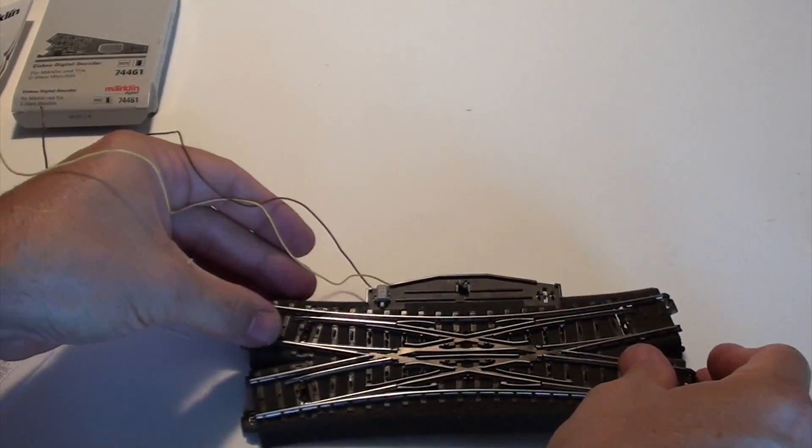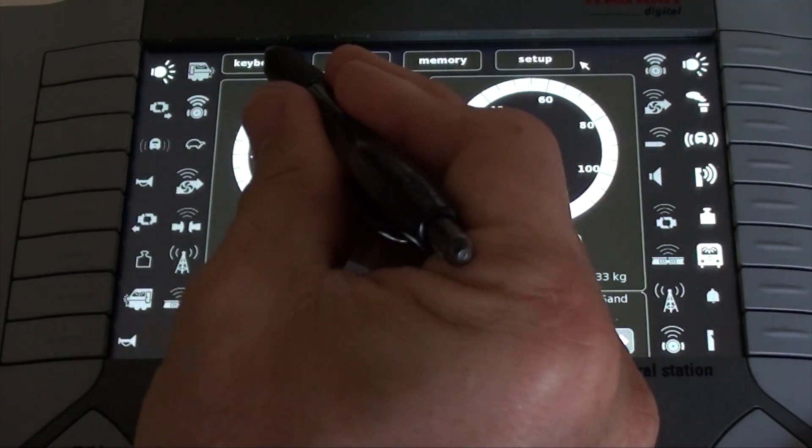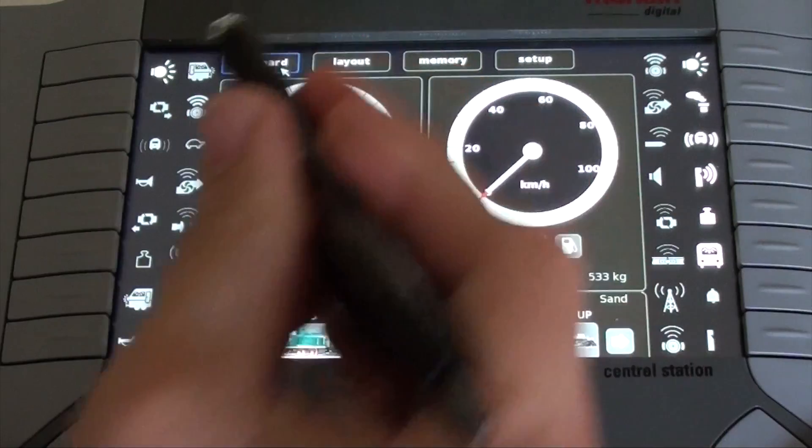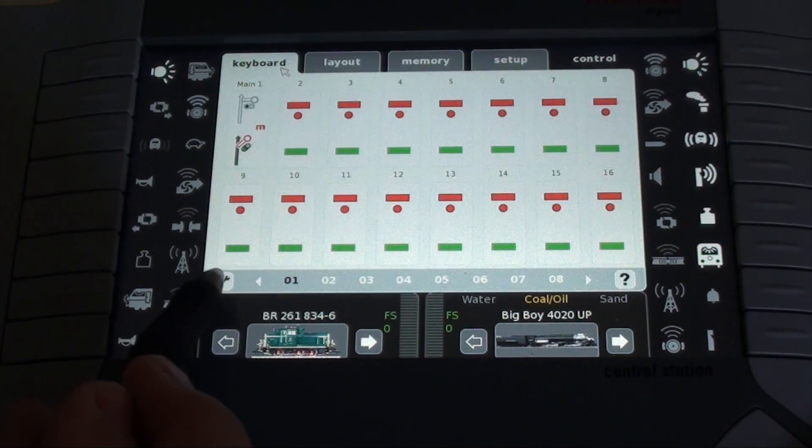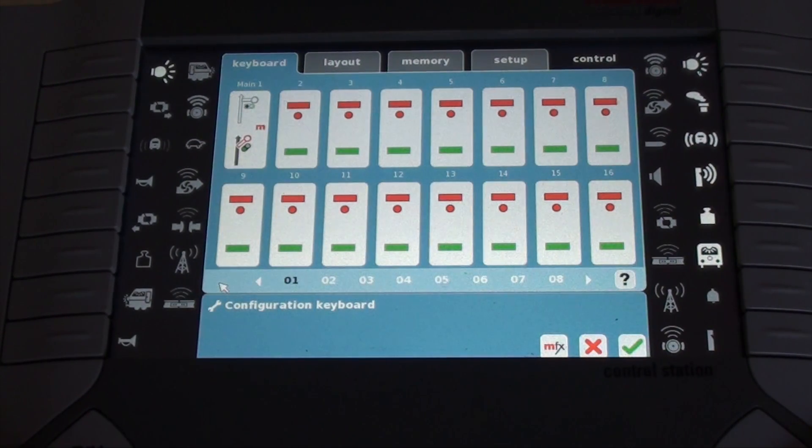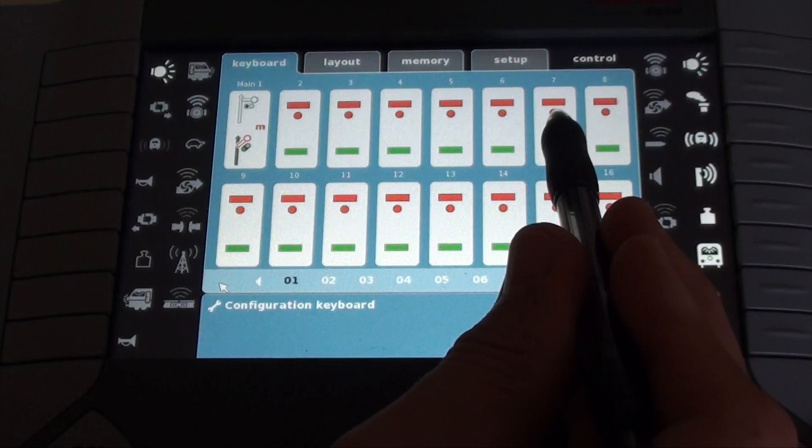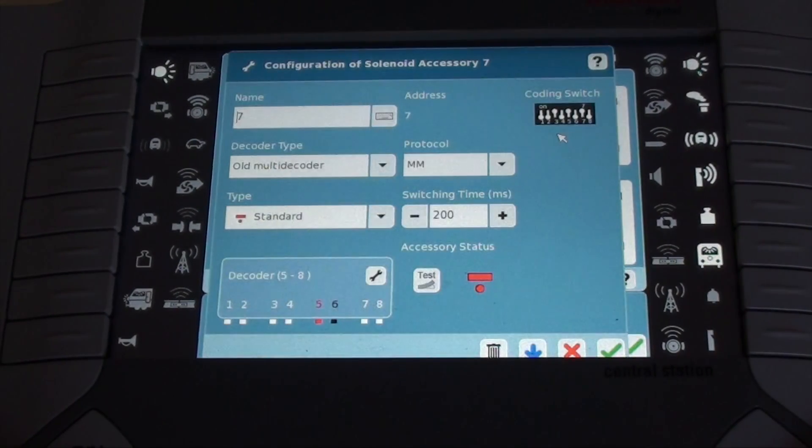We connect the track to our central station and power up the central station. We'll go to keyboard. We'll hit the wrench. We get the blue black around, which is good. And remember we set it to address number seven, so we'll hit the seven.